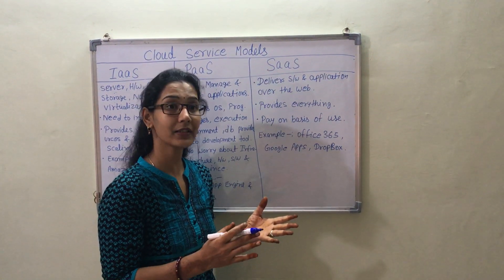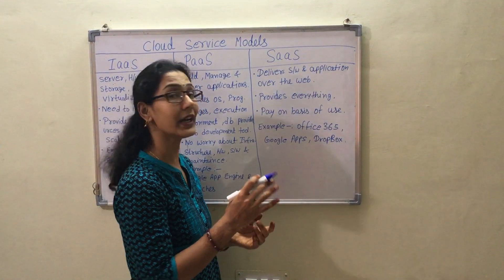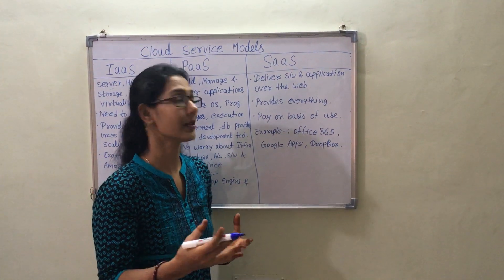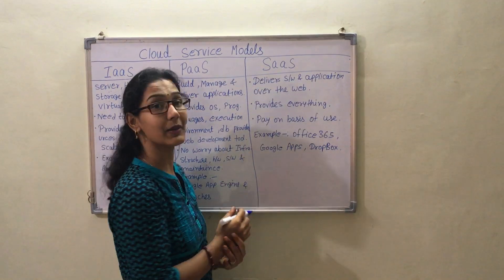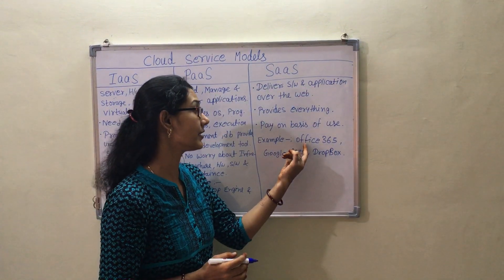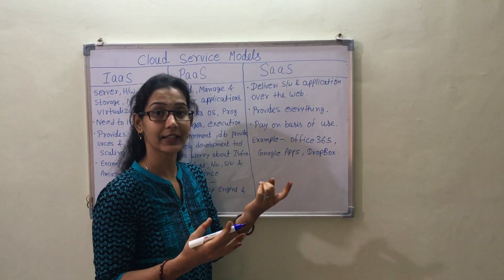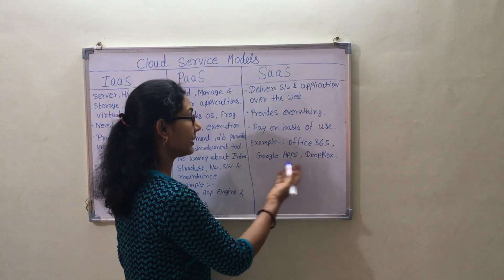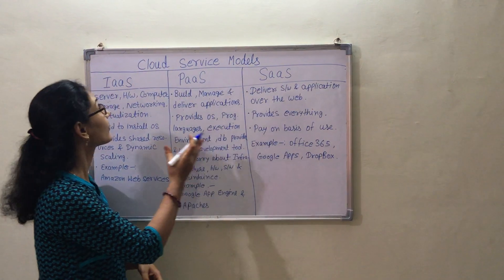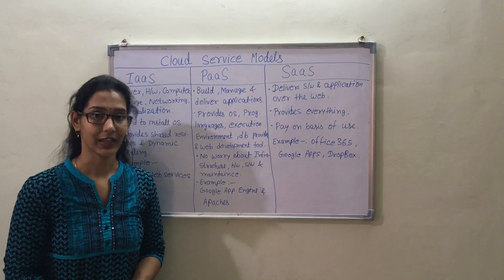In SaaS, everything is done by the service provider. A pre-configured or pre-installed package is given as per our requirements and we pay accordingly, or on the basis of consumption. The best example of SaaS is Office 365, which is the online version of MS Word, Excel, and PowerPoint. Other examples are Google Apps and Dropbox. These are the three cloud service models — thank you.